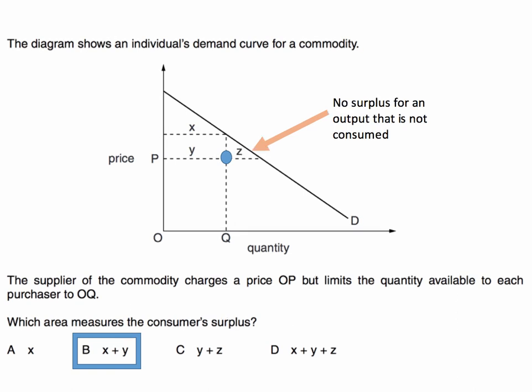But there's no surplus for an output that's not consumed. So the supplier is restricting quantity to Q. Therefore, the area Z is not consumer surplus because the output is not being consumed by this person.